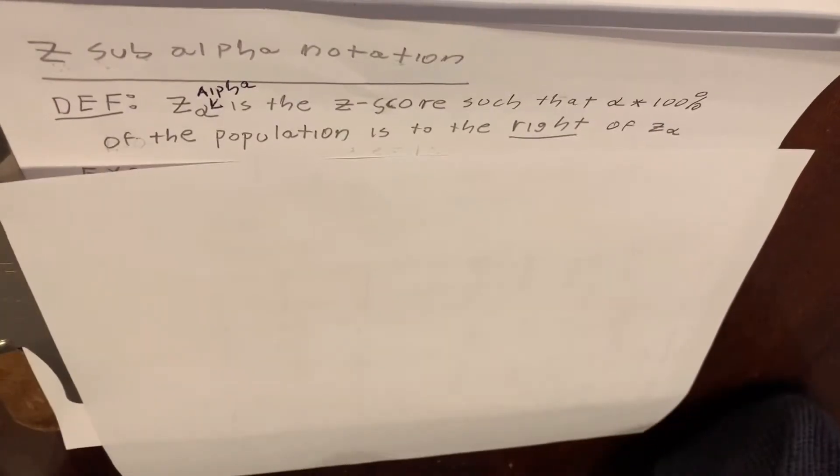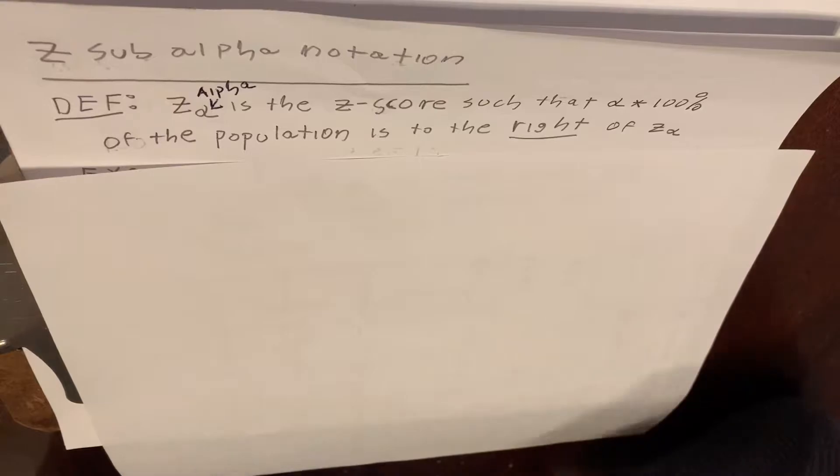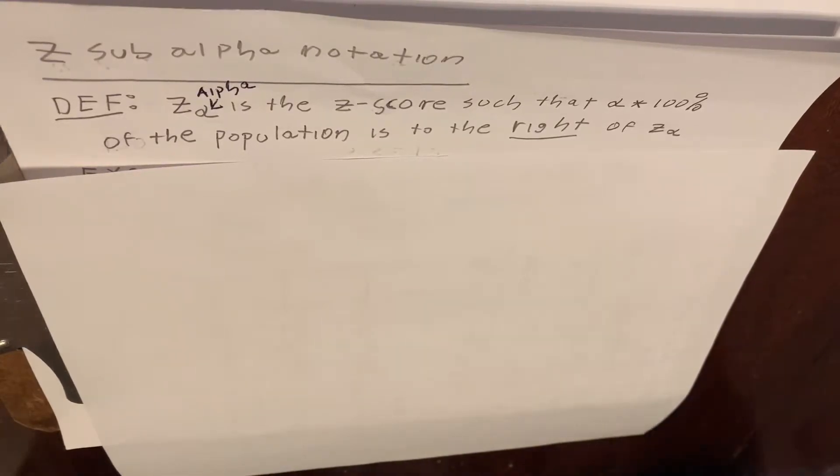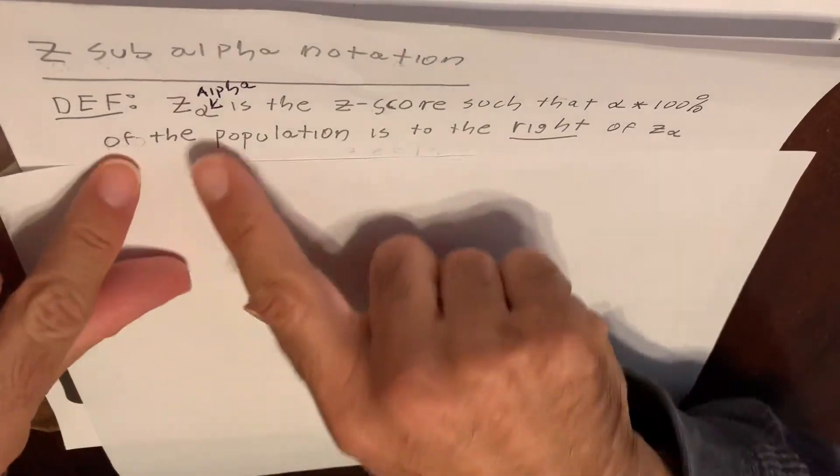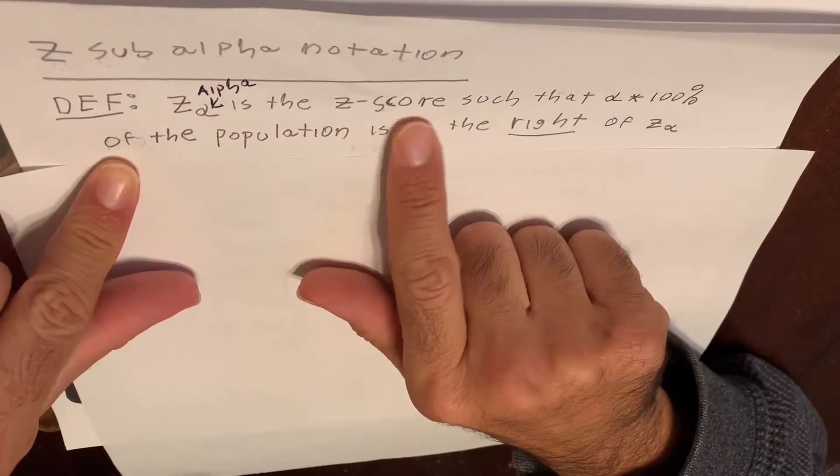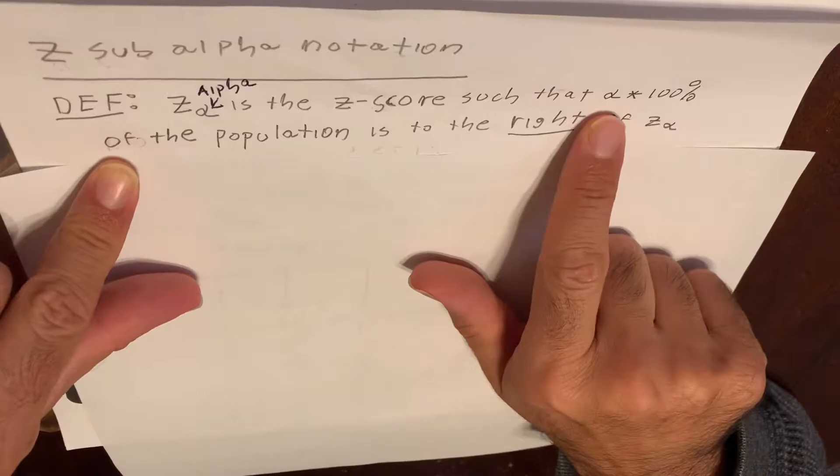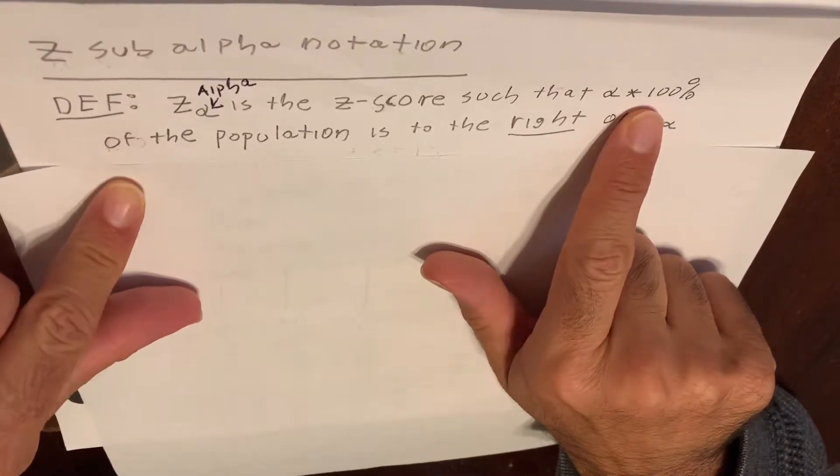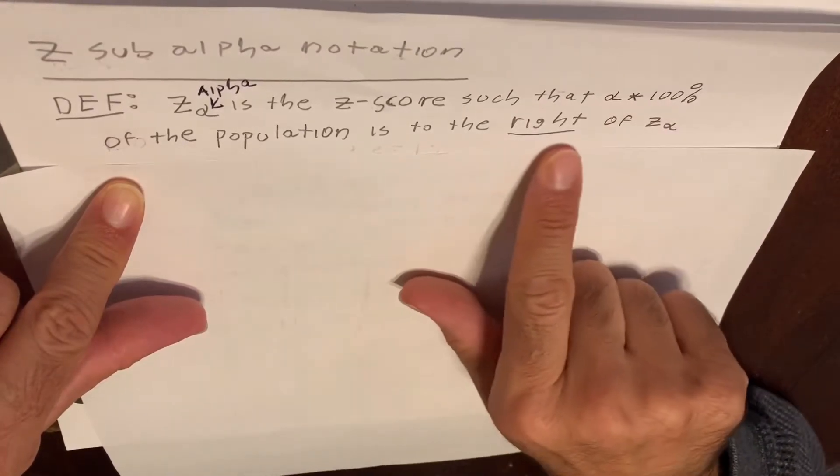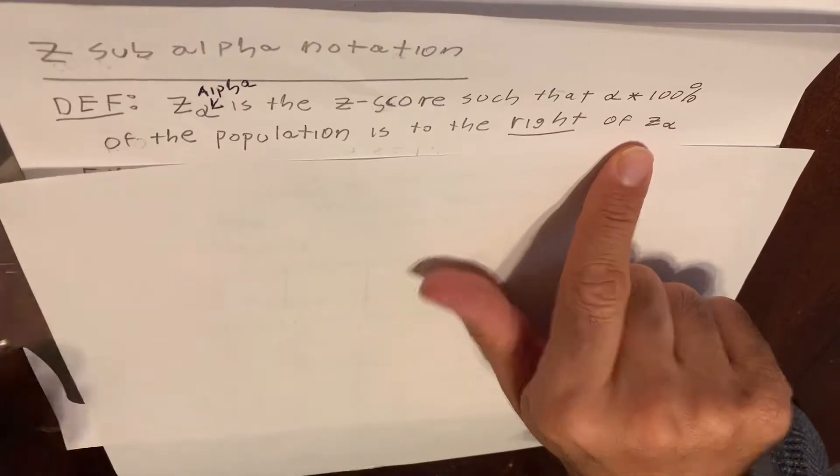Just to remind you, Z is a reserved letter in statistics, which means the standard normal distribution, which is a normal distribution with a mean of zero and a standard deviation of one. Z sub alpha is the Z score such that alpha times 100% of the population is to the right of Z sub alpha.